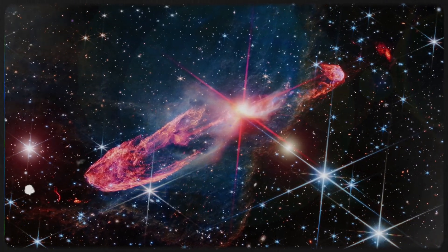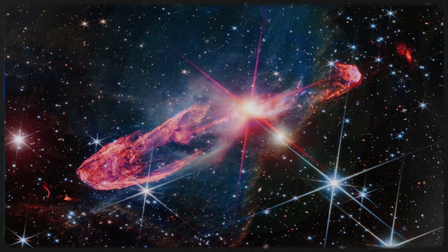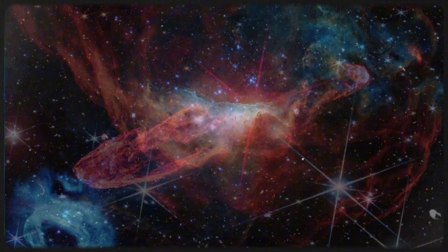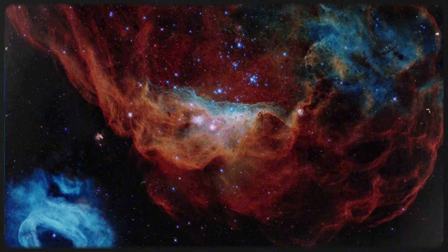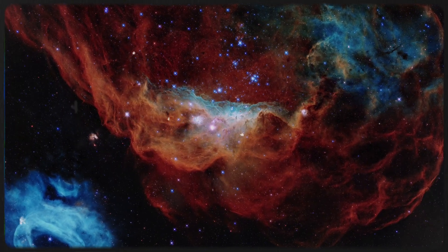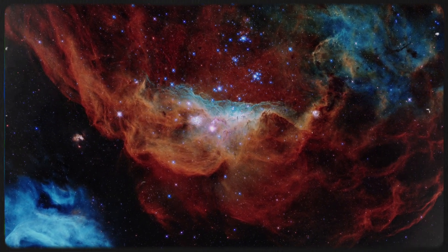As the jets from the young star crash into nearby material, they form what scientists call bow shocks, shaped like the waves that trail behind a speeding boat. And as luck would have it, this stunning foreground display is perfectly aligned with a serene spiral galaxy in the distant background, giving us an almost surreal contrast between the near and the far.